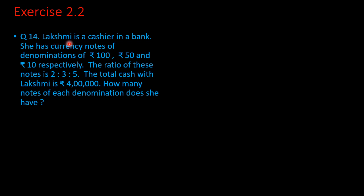Question number 14. Lakshmi is a cashier in a bank. She has currency notes of denominations of rupees 100, rupees 50 and rupees 10 respectively. The ratio of these notes is 2:3:5. The total cash with Lakshmi is rupees 4 lakh. How many notes of each denomination does she have?